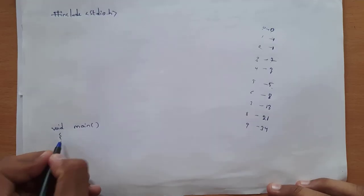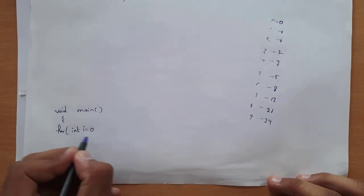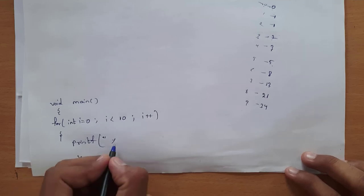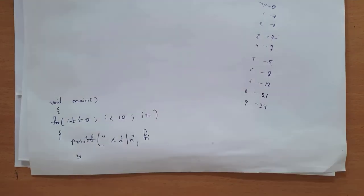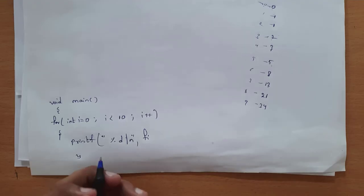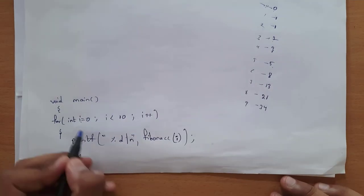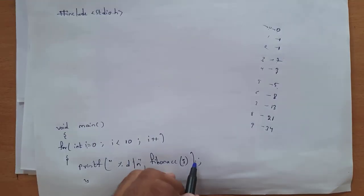I write void main. Inside void main take a for loop: int i = 0, i < 10, i++. Inside this write printf('%d\n', fibonacci(i)). I am creating my own function — let the function name be 'fibonacci' since we are finding the Fibonacci series. You can give any name you wish. So I write fibonacci(i) to call it with i.